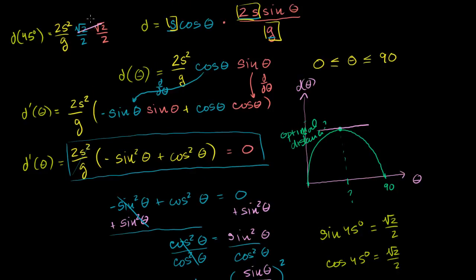The square root of 2 times the square root of 2 is 2. This 2 cancels out with the denominator 2, and then this 2 cancels with the 2 out front. So the optimal distance traveled at 45 degrees is simply s² over g. Assuming no air resistance — no matter what planet you're on or how fast you shoot it — the best angle is always 45 degrees, and at that angle you travel s² over g.